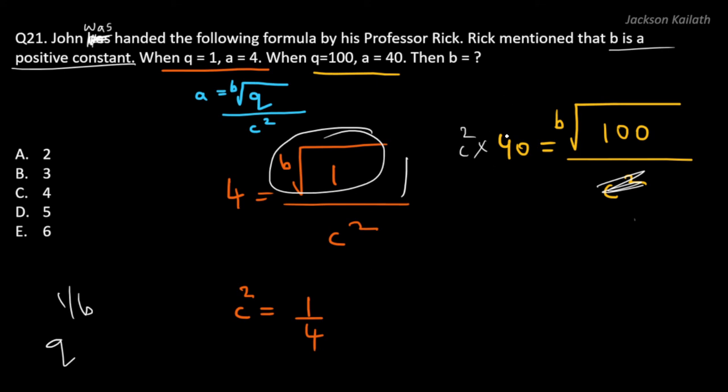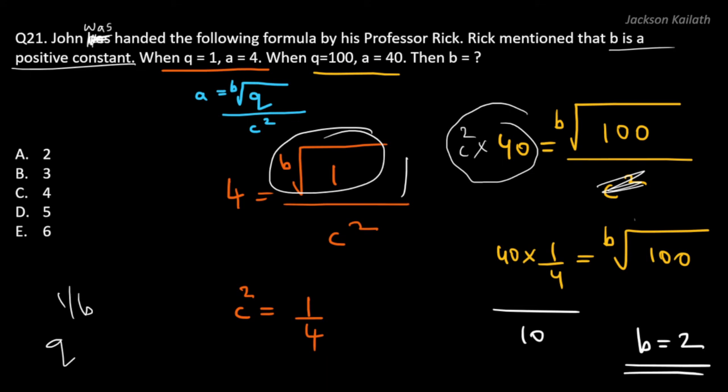So this becomes 40 into 1 by 4. This becomes 40 into 1 by 4 is equal to Bth root of 100. 40 into 1 by 4 is nothing but 10. This is 10. So what root of 100 is equal to 10? That would be 2. Square root of 100 is 10. So therefore the correct answer to this question which is the value of B, that would be equal to 2, which is answer option A.